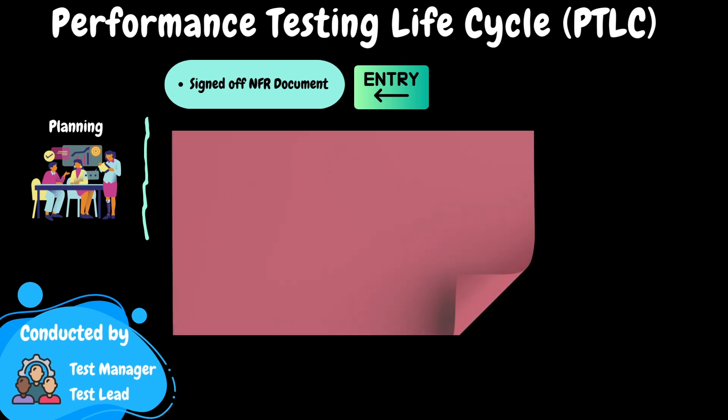Now let's dive into various planning activities. At the beginning of the project, the project team looks for a detailed breakdown of the performance-related tasks outlining the expected duration for each specific activity — this is effort estimation. This comprehensive breakdown not only provides transparency regarding our activities but also facilitates progress tracking for the project team.